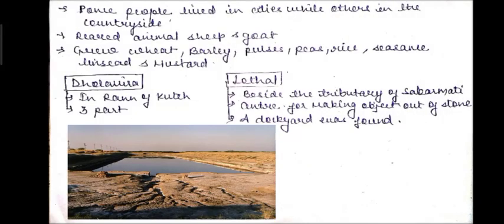Some people lived in cities while others lived in the countryside, rearing sheep and goat. They grew wheat, barley, pulses, peas, rice, sesame, linseed and mustard. Dholavira, located in the Rann of Kutch, is divided into three parts. Lothal, situated in Gujarat beside a tributary of the Sabarmati river, was a centre for making objects out of stones, and a dockyard was also found there.